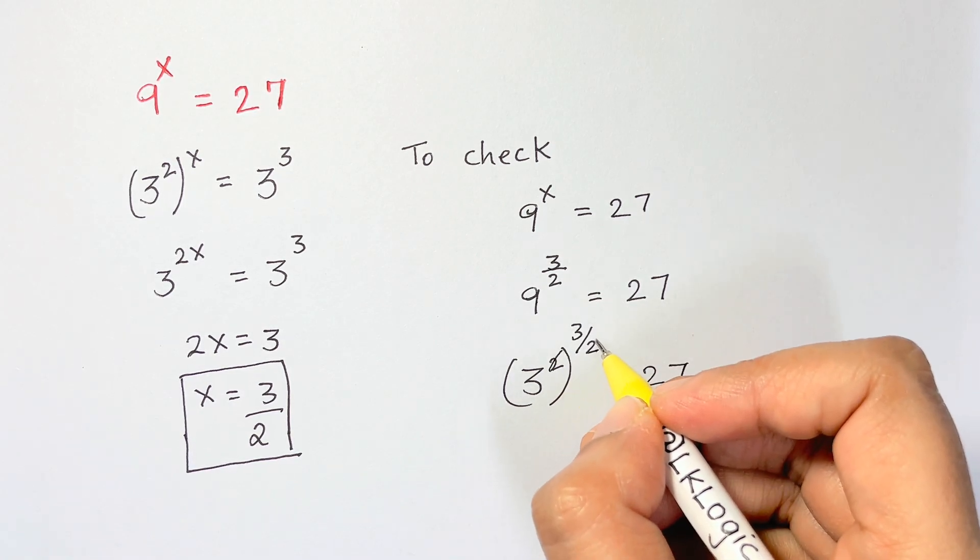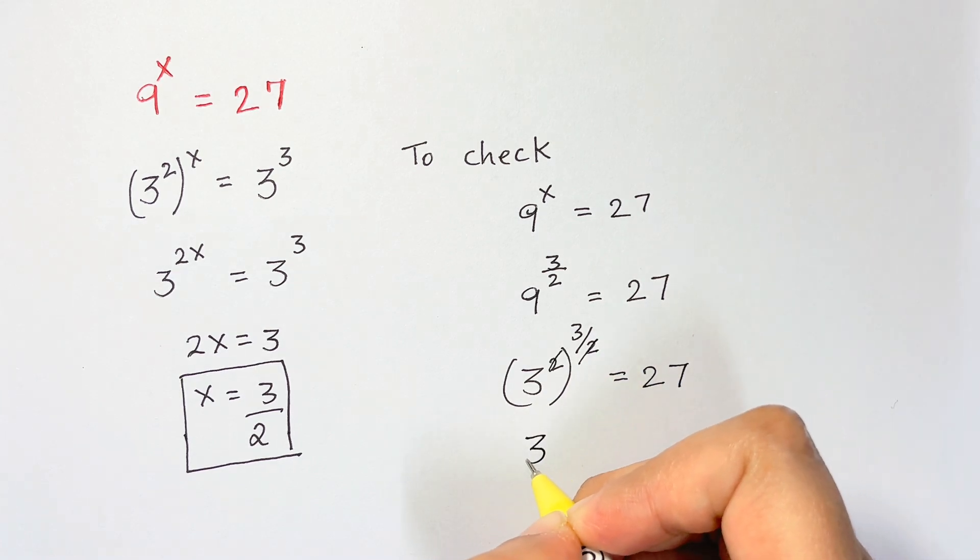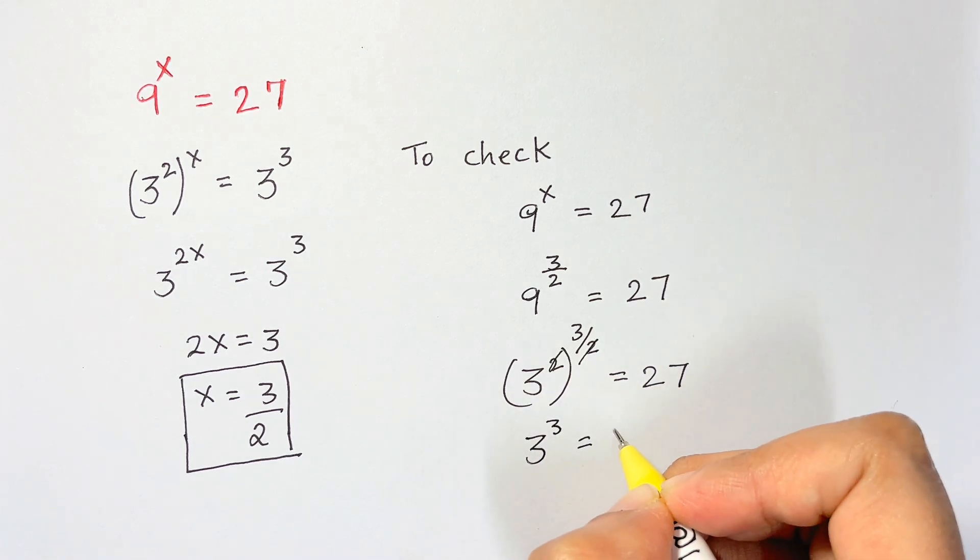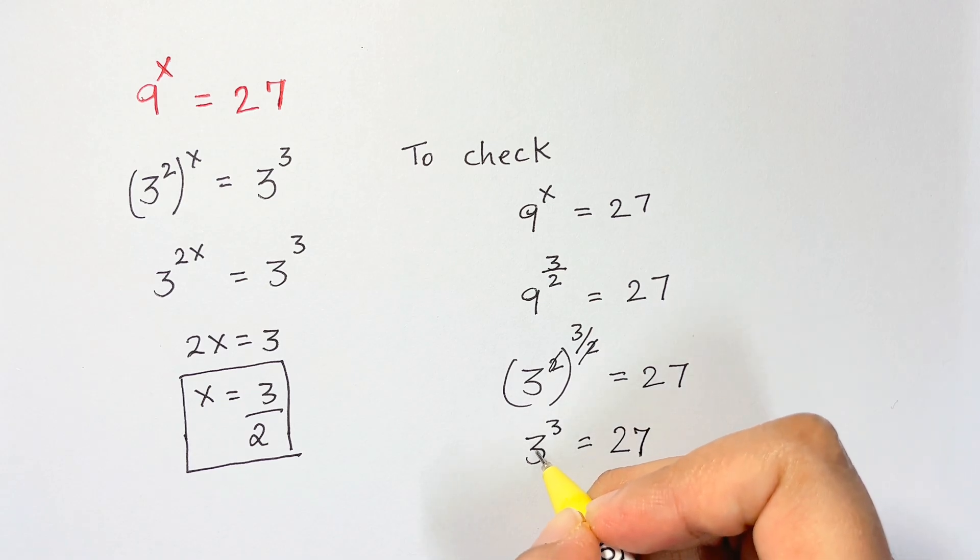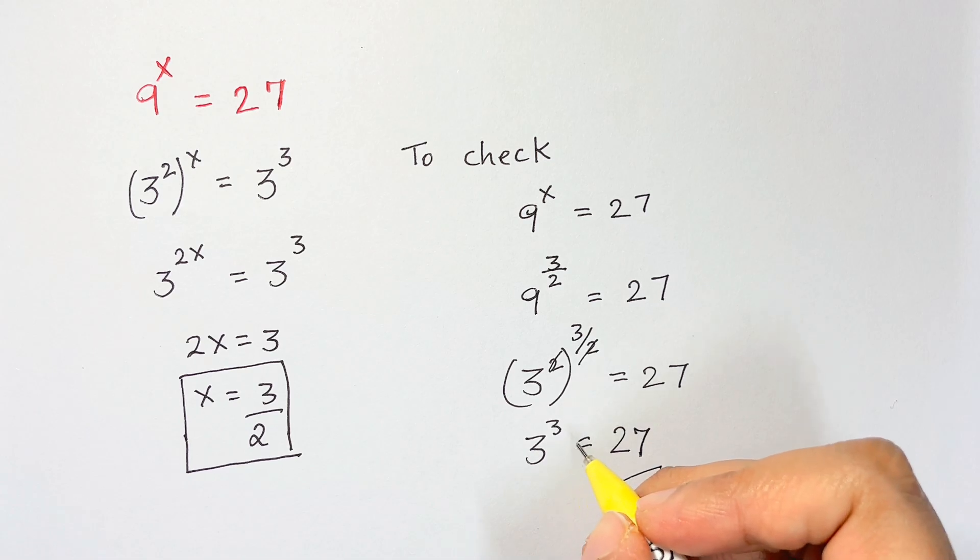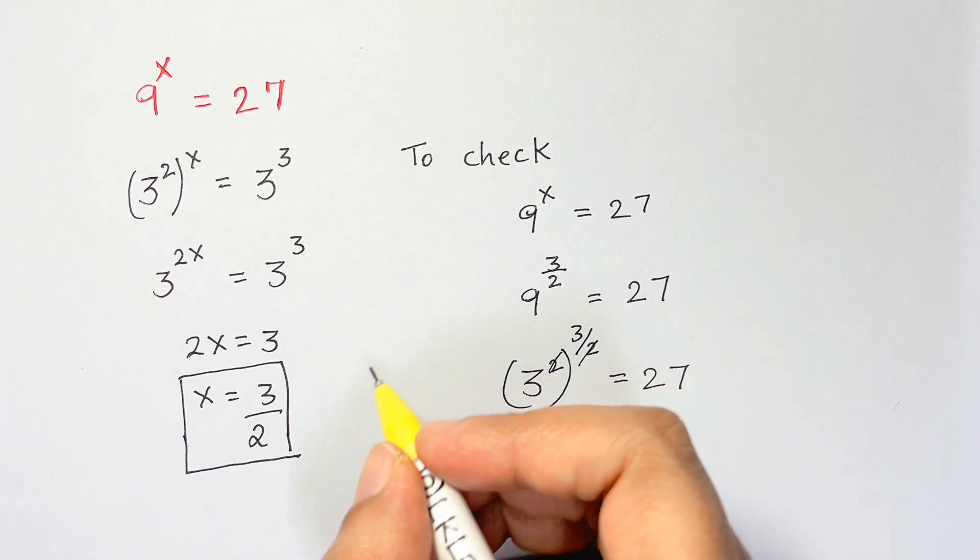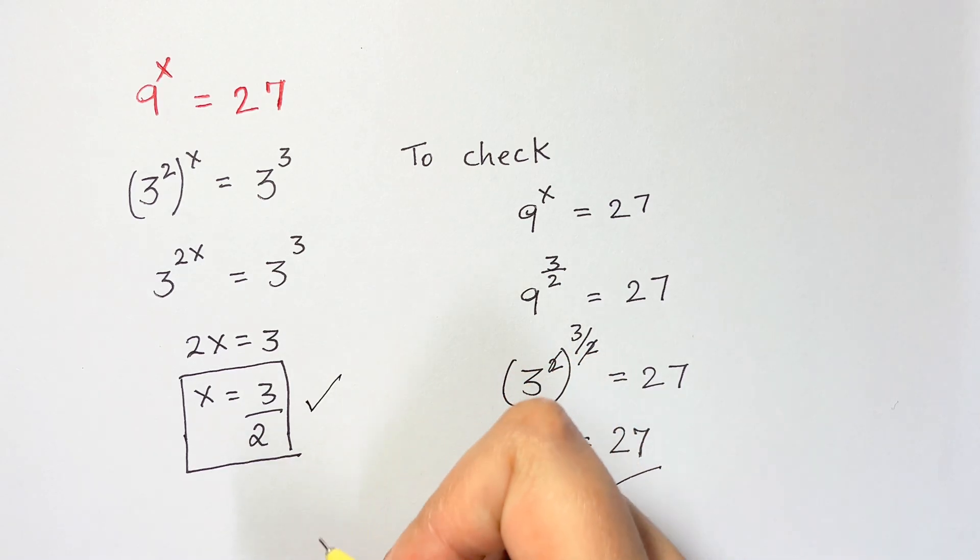And this square and 2 gets cancelled, so you're left with 3 cubed equals 27. Isn't it the same? 3 times 3 times 3 is 27 and that's true. 3 times 3 is 9, 9 times 3 is 27 and that's true. So x equals 3 over 2 is the right answer.